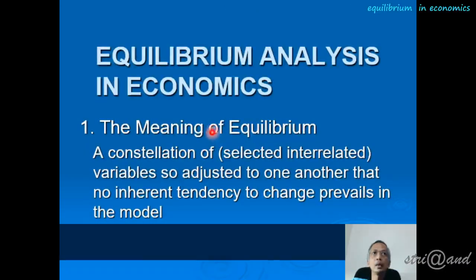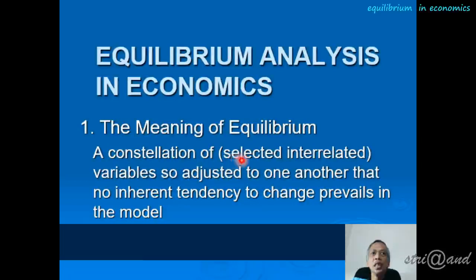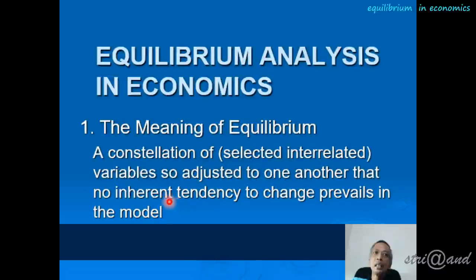This video is about equilibrium analysis in economics. Equilibrium is a constellation or system of selected interrelated variables — not just any variables, but only the relevant ones, adjusted to one another so that no inherent tendency to change prevails in the model. The system behaves the same way consistently.